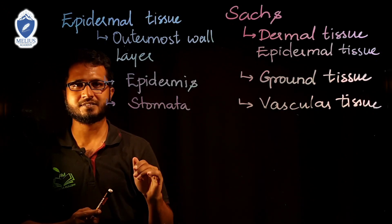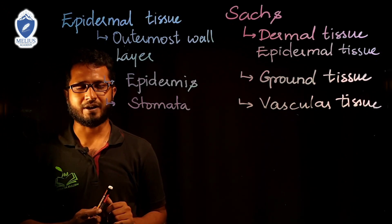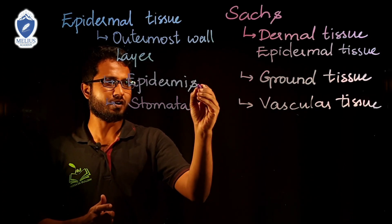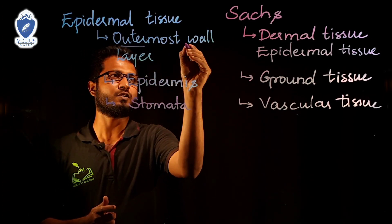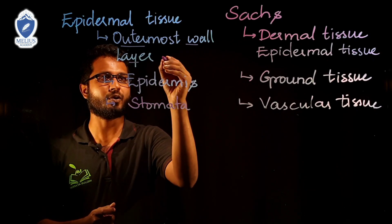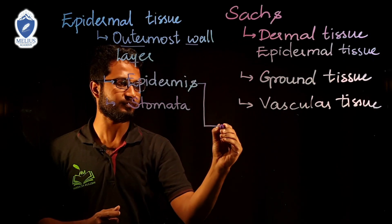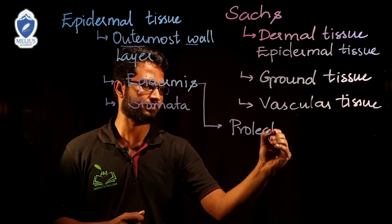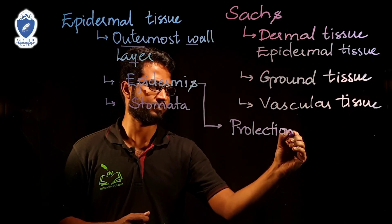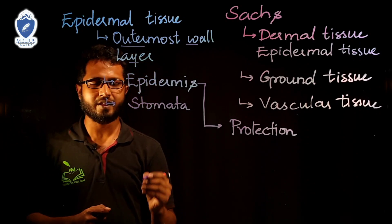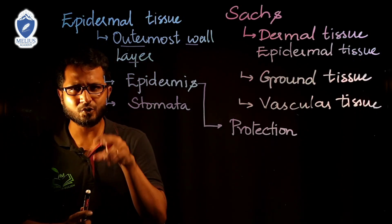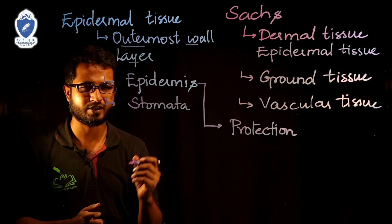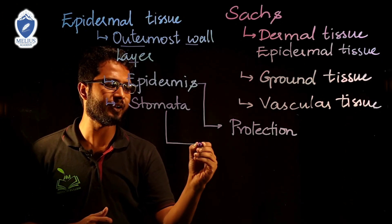So we have epidermis and stomata. The function of epidermis: since it is the outermost layer, it provides protection. The function of stomata: the minute pores present on the outer surface — stomata help in removal of water.